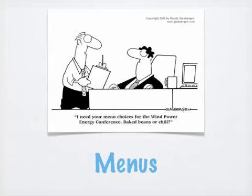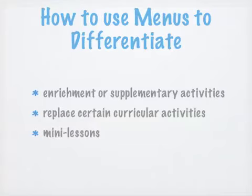Think about the last time you went to a restaurant. More than likely, you were given a menu containing a list of choices for your meal — the goal being to select something to satisfy your hunger. Choice menus are a way of allowing students to choose what and how they want to learn to satisfy their learning hunger. Menus can be a simple list of activities to demonstrate learning objectives, or more complex systems where students earn points by making choices from different areas of study. I will discuss how to use choice menus to differentiate and illustrate three examples of menus.